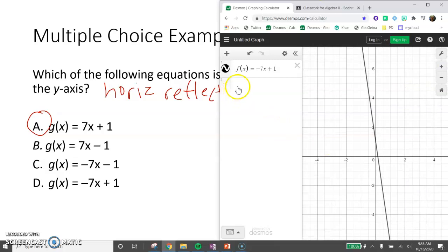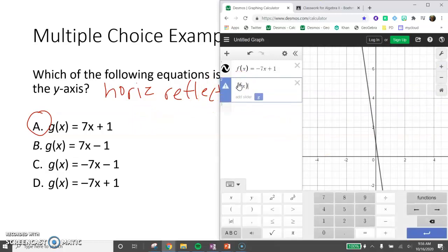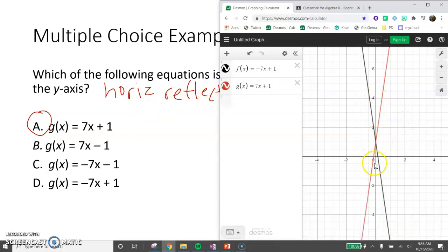I'm going to zoom in a little bit more on that. And we want to reflect it about the y-axis. So let's check what we think is the answer, g of x equals 7x plus 1. And that looks right. We're reflecting about the y-axis. We have that symmetry here across the y-axis.